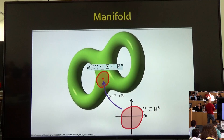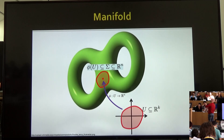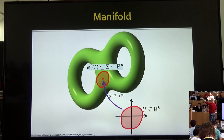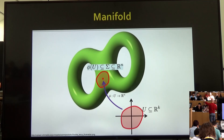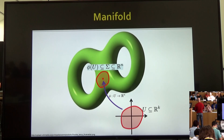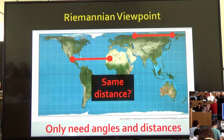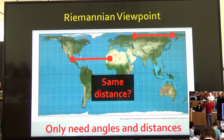This goes back to Gauss's theory of differential geometry of embedded surfaces, where the geometry is inherited from the surrounding space. But about a hundred years later, Riemann made a simple but profound observation. Looking at a map of the world: the map is a rectangle, but when we think about distances between Mexico and Africa, we don't measure them in meters on the screen — we think of them as actual miles on Earth.